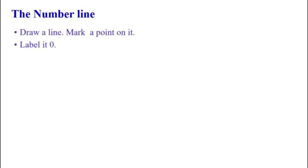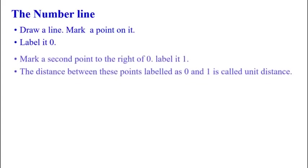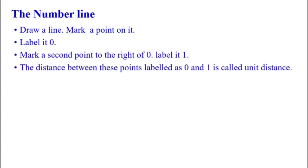Let us discuss about the number line. To draw a number line, you have to follow some procedure. First, draw a line and mark a point on it, label it 0. Mark a second point to the right of 0, label it 1. The distance between the points labeled 0 and 1 is called the unit distance.